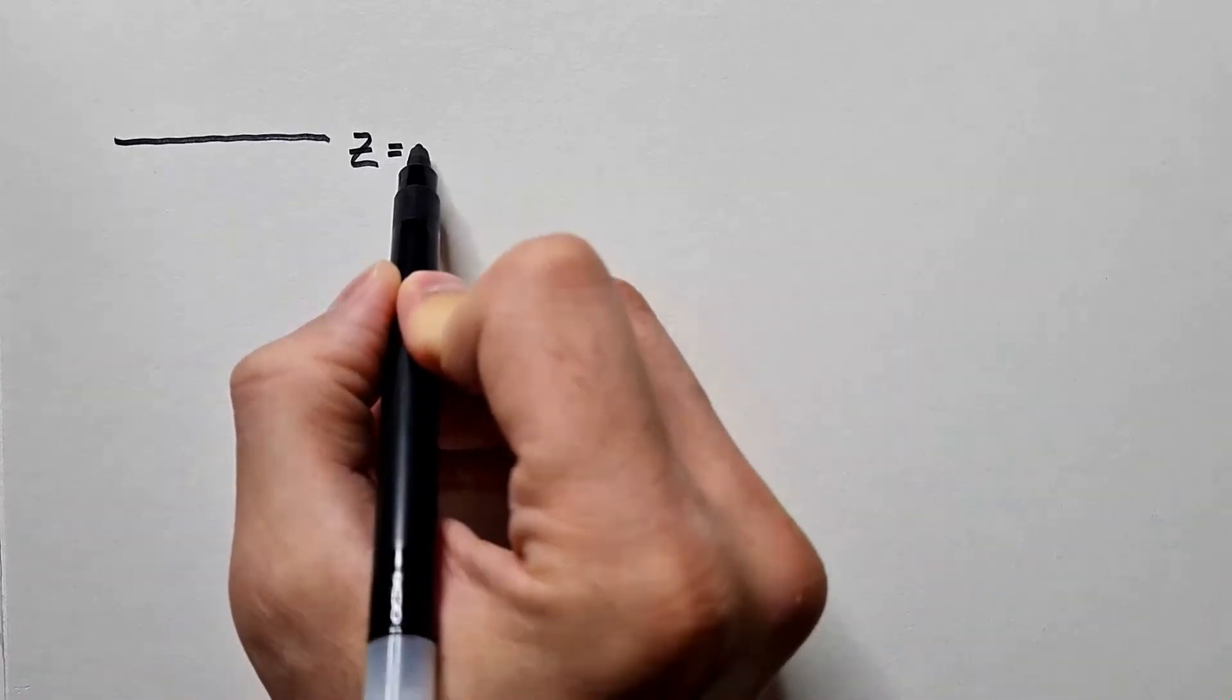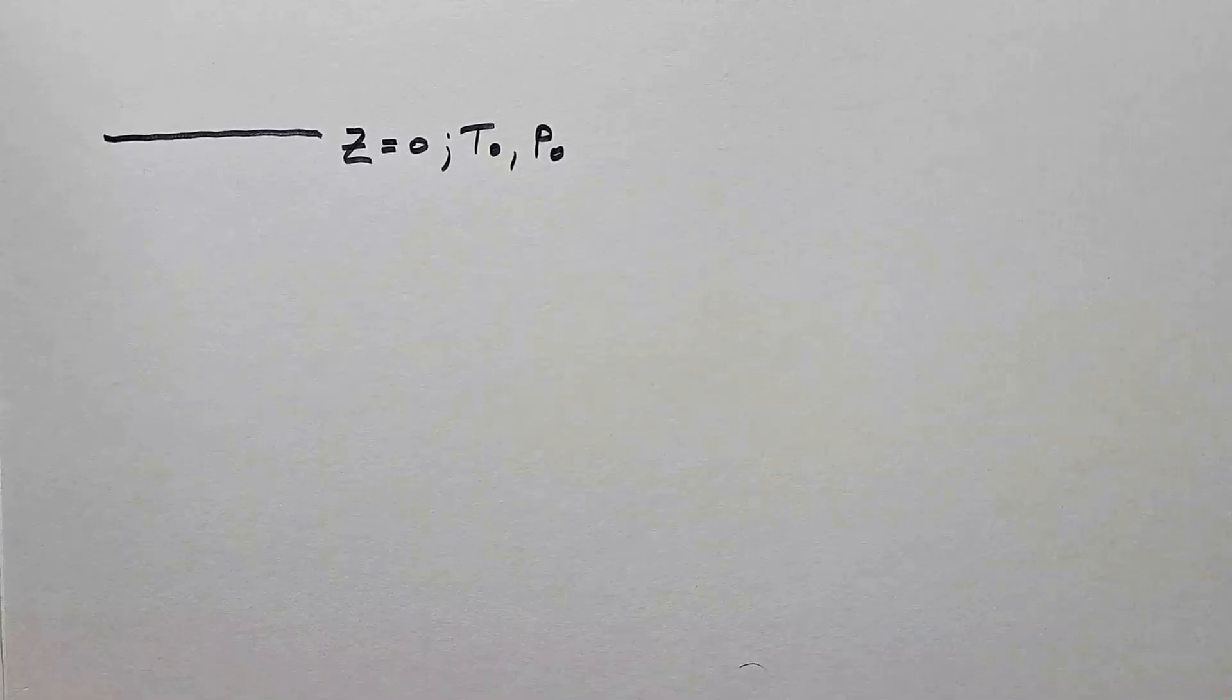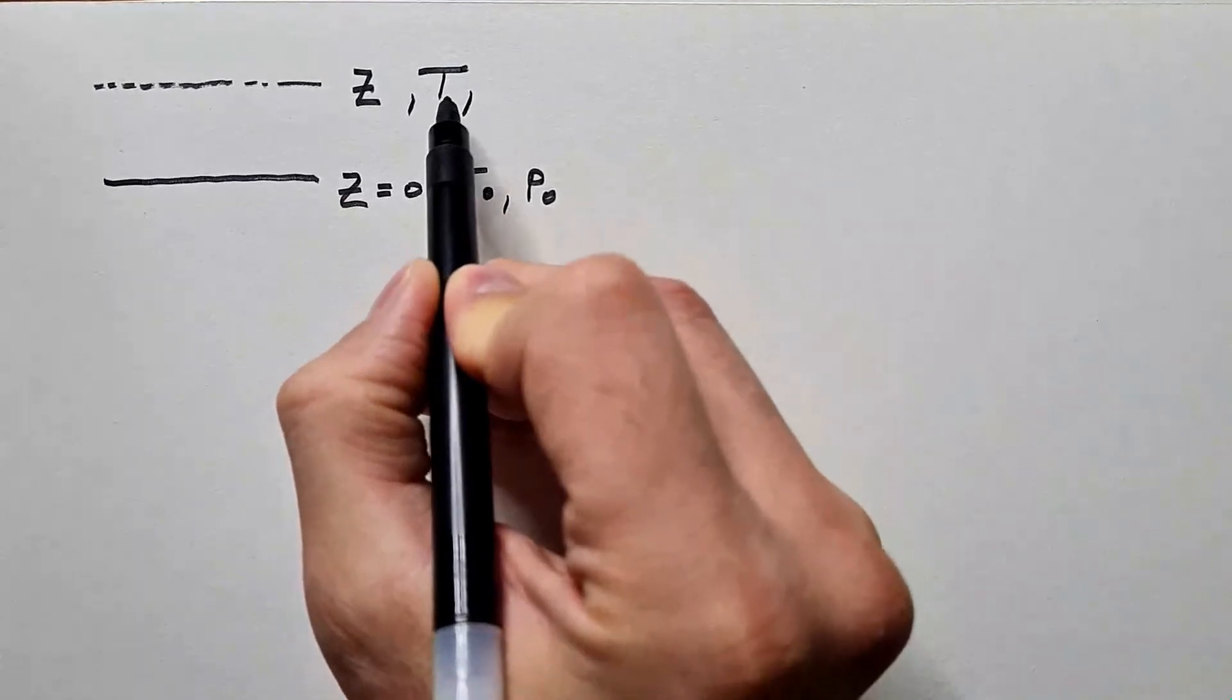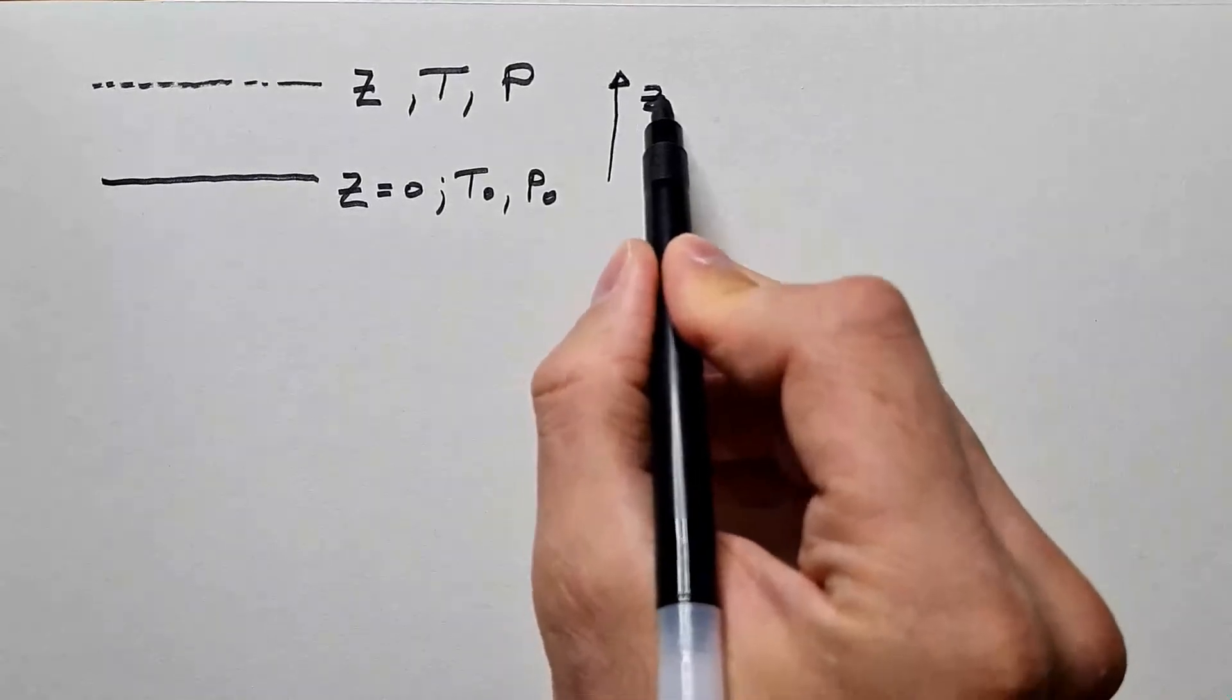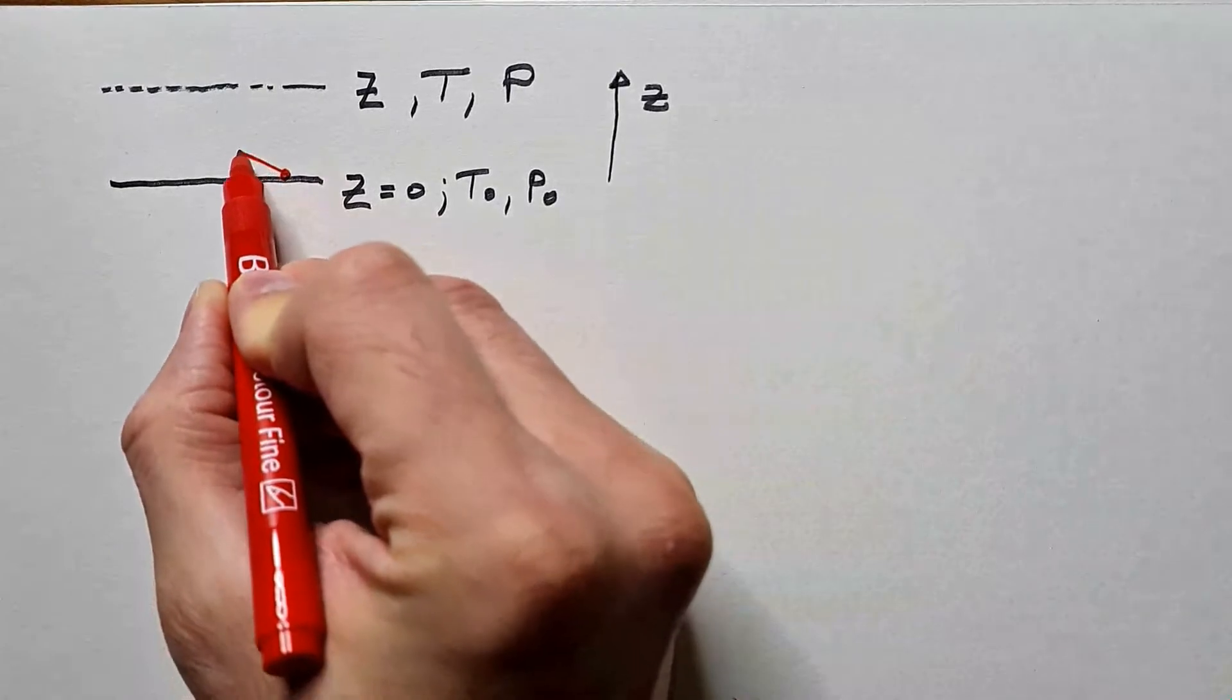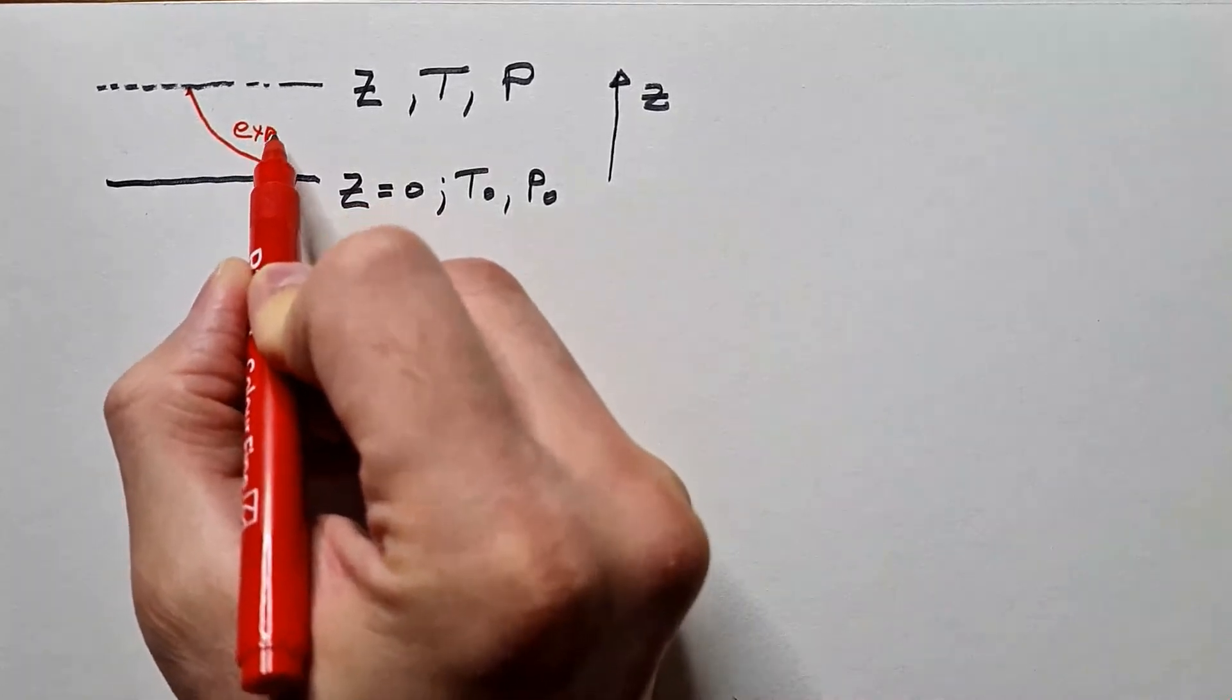Let's start by sketching this problem. Here is the surface of the Earth, Z equals 0, and we have temperature T0 and pressure P0 at the surface. Some distance away, there is a height Z, and at that height we have temperature T and pressure P. Clearly, this is the vertical Z axis. What we are considering in this video is a hypothetical situation in which temperature exponentially decreases with the height.